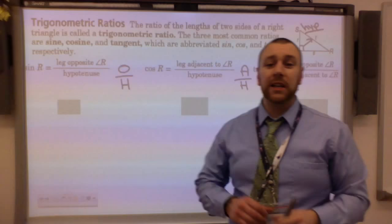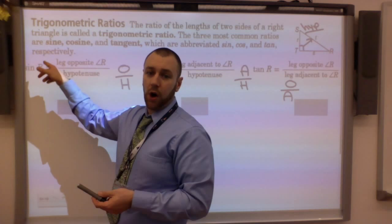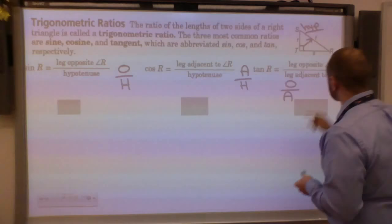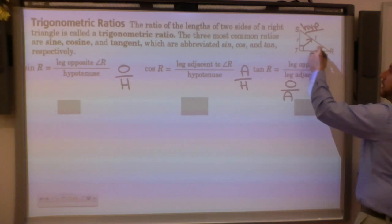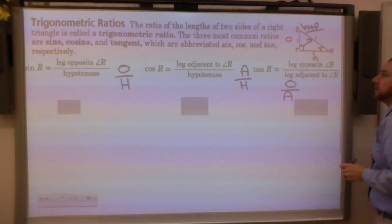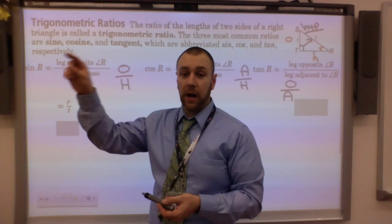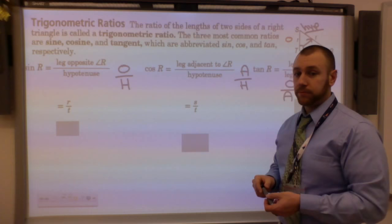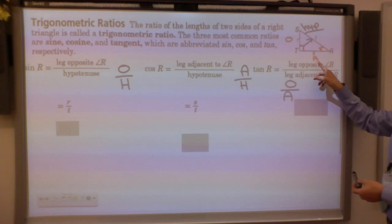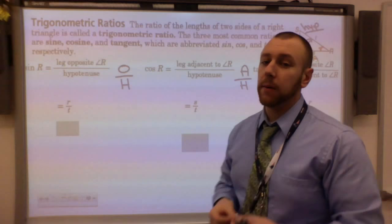Opposite means opposite of the angle they're looking at. So if I'm looking at angle R — capitals are angles — the sine of R: what's opposite of R is the side across from it, and the adjacent is next to it. The sine of R is the R-side over the T-side, opposite over hypotenuse. The cosine is the adjacent side over the hypotenuse, so that's S over T. The tangent is the opposite over the adjacent, so that's R over S.